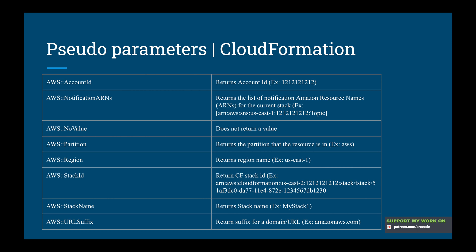Then we have AWS NoValue, which does not return any value. Then we have AWS Partition — it returns the partition that the resource is in. For standard AWS regions the partition is 'aws', as shown in the example, and for resources in other partitions the partition is 'aws-' followed by the partition name. For example, the partition for resources in China Beijing is 'aws-cn'.